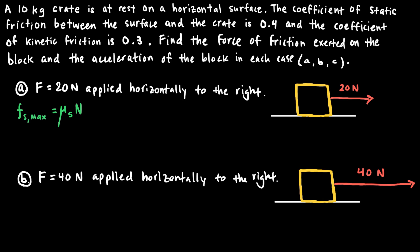In Case A, there's a 20 newton force acting to the right, the weight of the block acting down equal to mg, a normal force pointing upward labeled N, and the frictional force pointing to the left. We're trying to determine the maximum value of static friction using the coefficient of static friction, 0.4, times the normal force. The normal force equals the weight: 10 kilograms times 9.8, giving a maximum static frictional force of about 39 newtons.